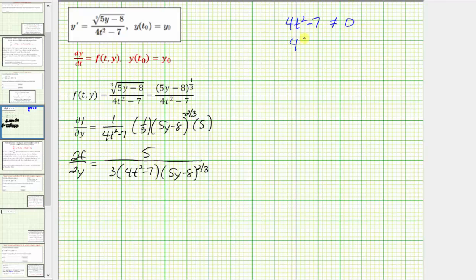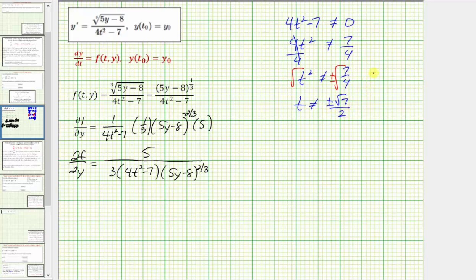Adding seven to both sides and dividing by four, we get t² can't equal seven-fourths. Taking the square root of both sides, t can't equal plus or minus the square root of seven divided by two — approximately plus or minus 1.3229. So f(t, y) is continuous everywhere except at these two t values.